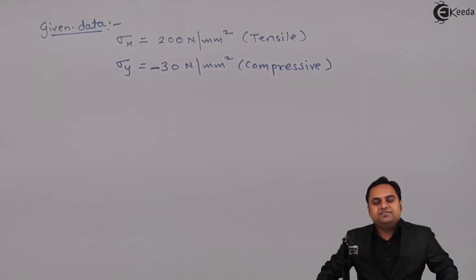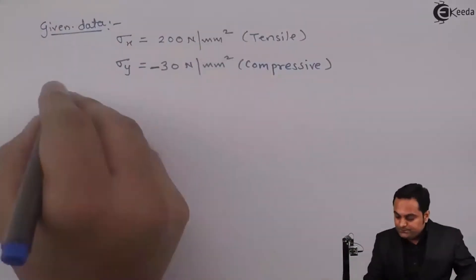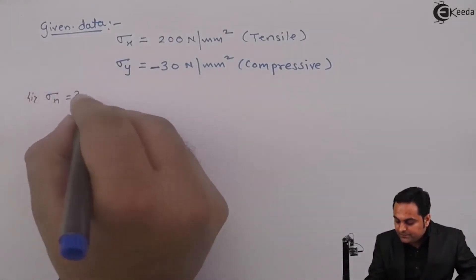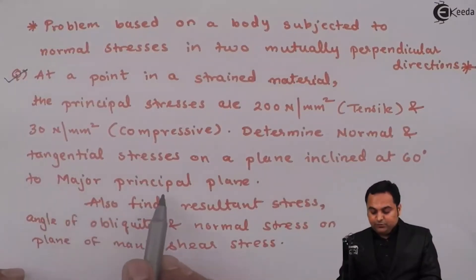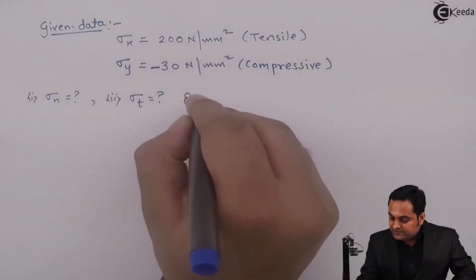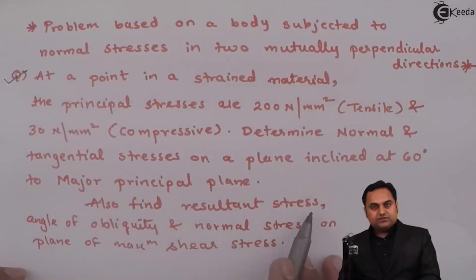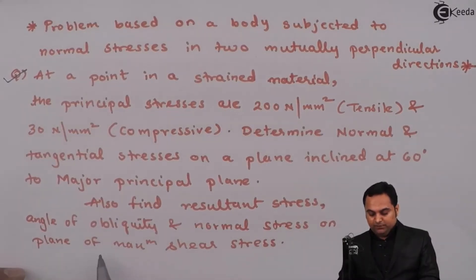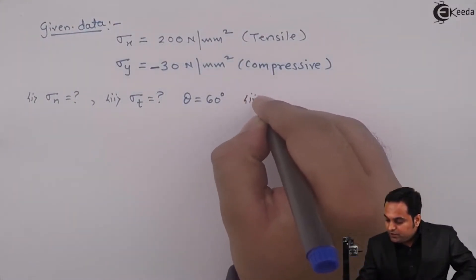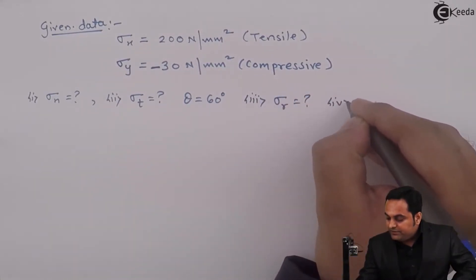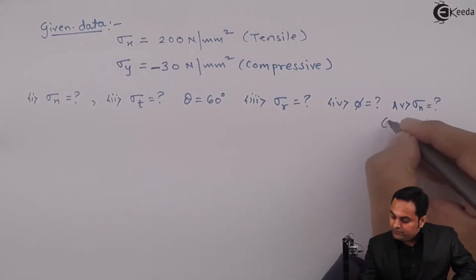Compressive stresses are taken as negative in this chapter. We need to determine the normal stress (sigma n) and tangential stress (sigma t) on a plane inclined at 60 degrees to the major principal plane. We also need to find the resultant stress, angle of obliquity (phi), and the normal stress on the plane of maximum shear stress.